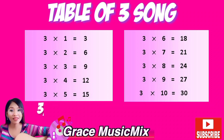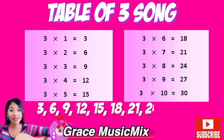3, 6, 9, 12, 15, 18, 21, 24, 27. It's table of three.